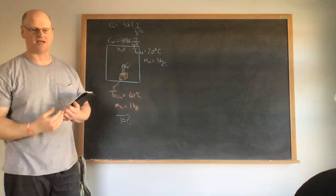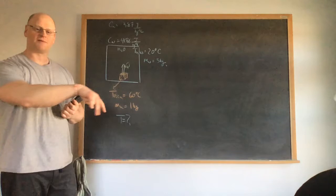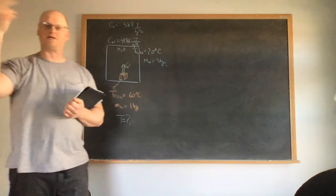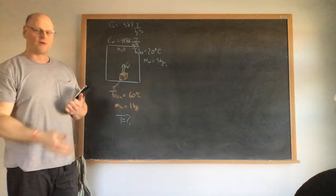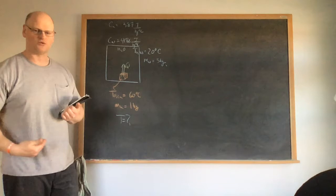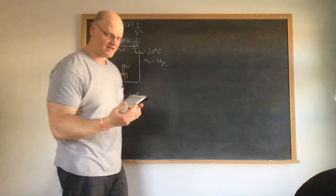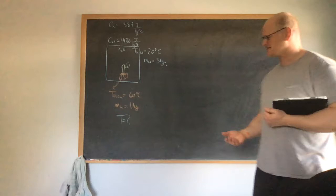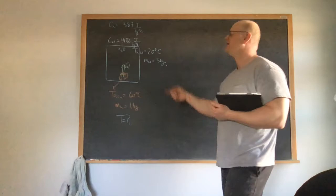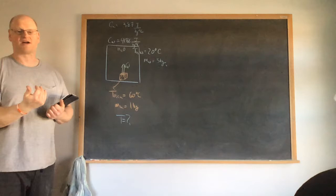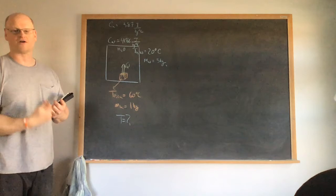That brings us back to the coal-walking question. We can walk across coals because we're mostly made of water, giving us a specific heat around 4,000. We also have a lot of mass, meaning it takes a great deal of energy transferred from the coals to raise our temperature by a single degree. If you simply walk at a leisurely rate rather than standing still, the high specific heat of our bodies prevents significant temperature increase.